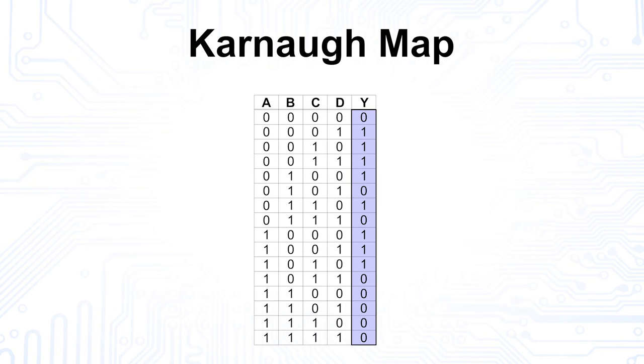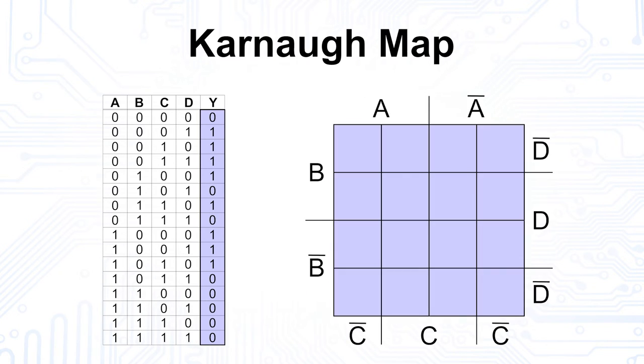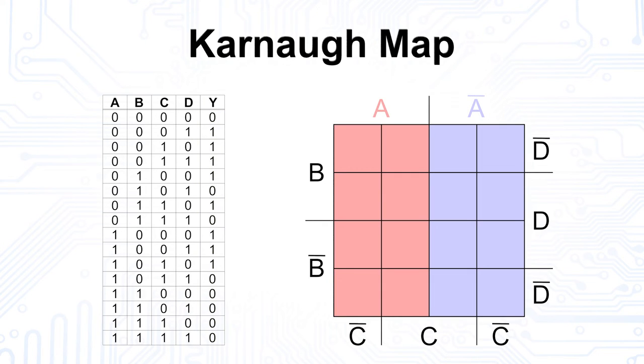So, let's simplify the big table. Since the table has 16 rows, our Karnaugh map also needs 16 fields. In our example, the left two columns represent the input variable a, the right two the inverted input variable a dash.